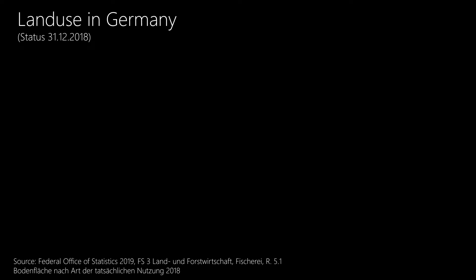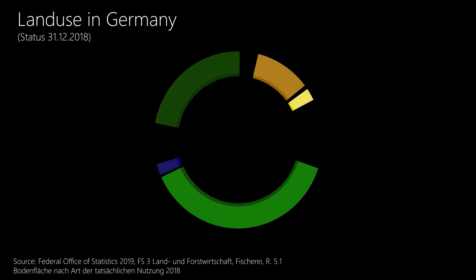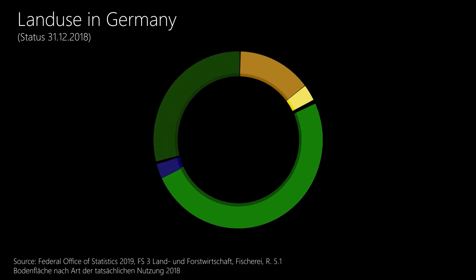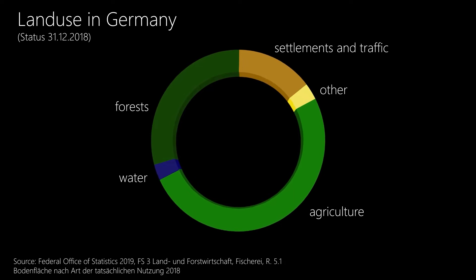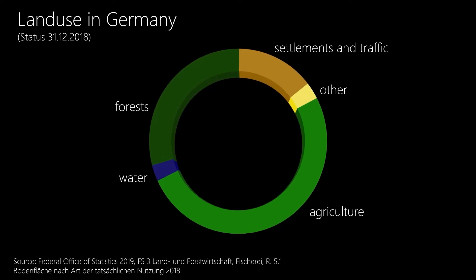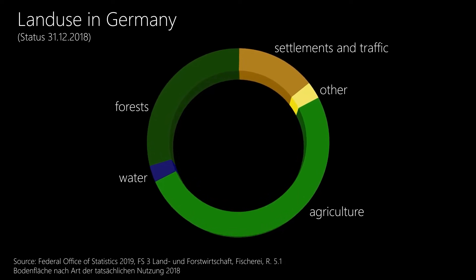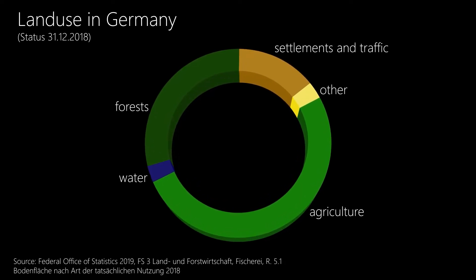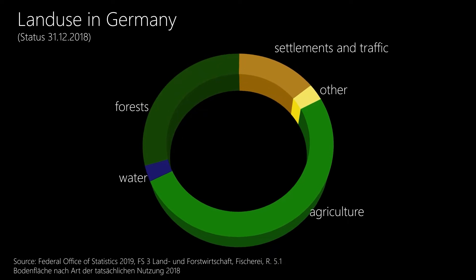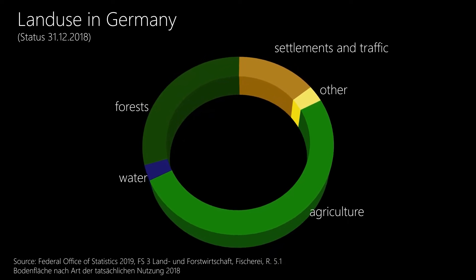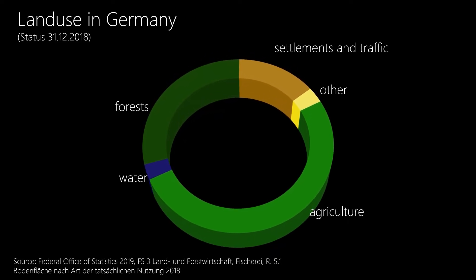The term land use, on the other hand, refers to any kind of use of soils and land areas by humans. It therefore only includes anthropogenically used soils and describes the use of these areas from a socio-economic point of view.